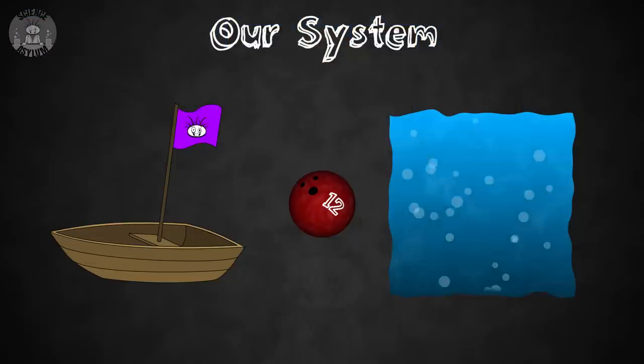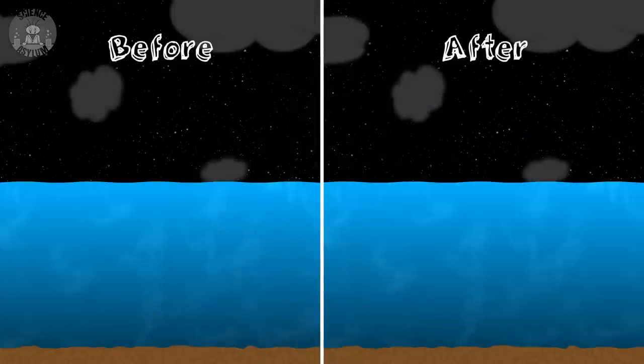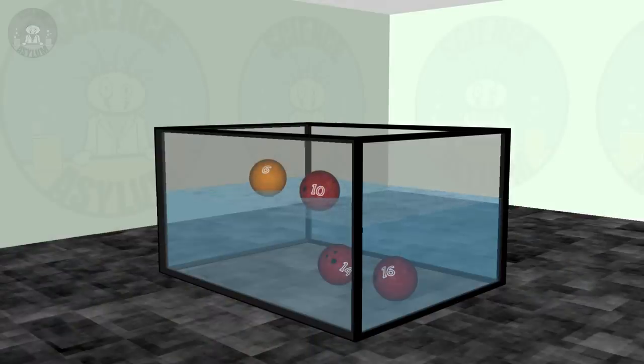But as it turns out, the water level can't go up if nothing enters the system. The bowling ball is already in the system, so that only leaves us with two options: either the water level stays the same or it goes down. Actually, it depends on whether the bowling ball sinks or floats. Any bowling ball under about 12 pounds or 5.5 kilograms will float on water. All the heavier ones sink.